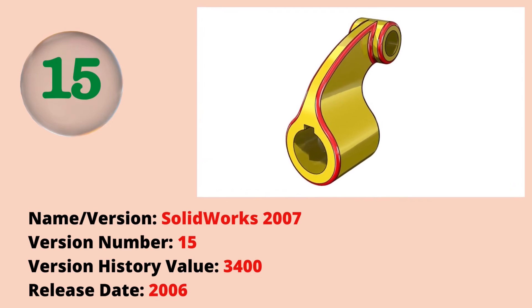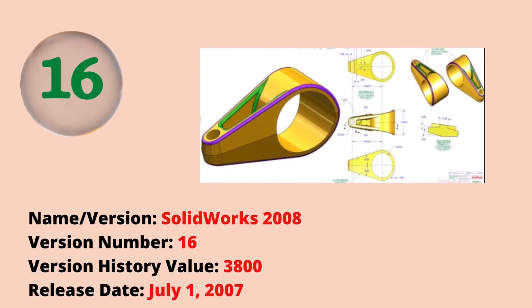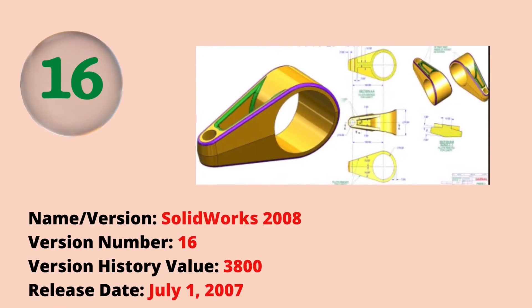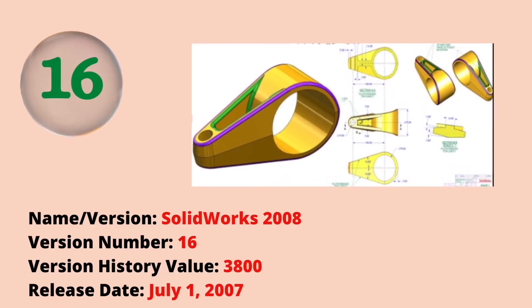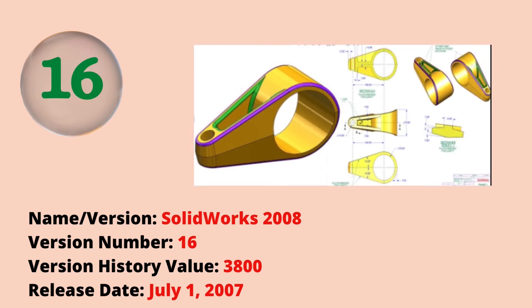The fifteenth version was SOLIDWORKS 2007 with a version history value of 3400. The release date was 2006. The sixteenth version was SOLIDWORKS 2008 with a version history value of 3800. The release date was July 1, 2007.